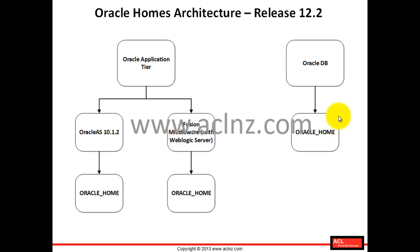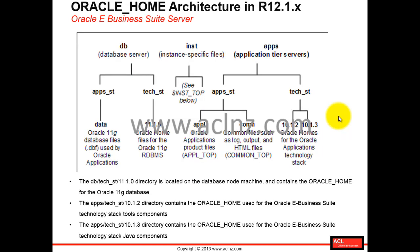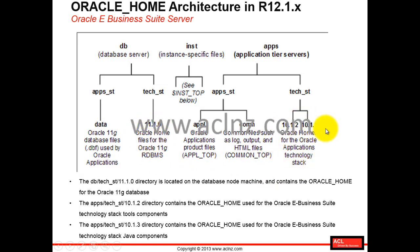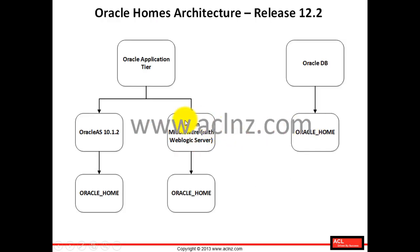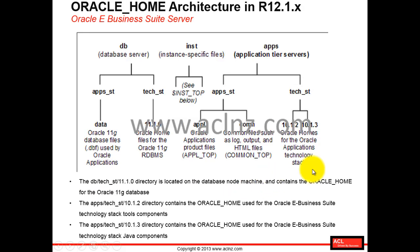Comparing with the 12.1 architecture: in 12.1, there are three homes — one in the database tier and two in the application tier, specifically the 10.1.2 AS and 10.1.3 AS base Oracle homes. In 12.2, this has been totally replaced and what you get now is the Fusion Middleware base Oracle home. In fact, the directory structure has also changed.